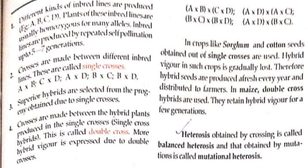In crops like sorghum and cotton, seeds obtained from single crosses are used; however, hybrid vigor in such crops is gradually lost. Therefore, hybrid seeds are produced fresh every year and distributed to farmers. In maize, double cross hybrids are used — they retain hybrid vigor for a few generations. Heterosis obtained by crossing is called balanced heterosis, and that obtained from mutation is called mutational heterosis.